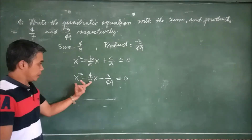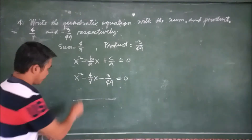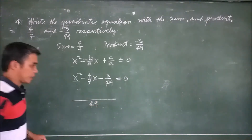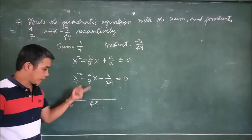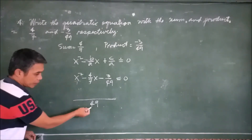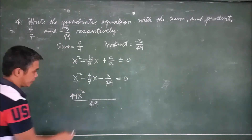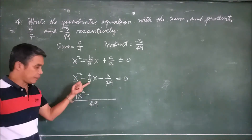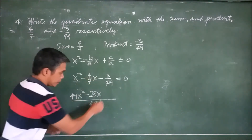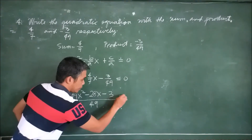Now let's simplify by finding the least common denominator. The denominators are 1, 7, and 49. The LCD is 49 since 49 is divisible by 49, by 7, and by 1. Multiplying through: 49 divided by 1 times x² equals 49x²; 49 divided by 7 equals 7, times 4 equals 28x; 49 divided by 49 equals 1, times 3 equals 3. So we have 49x² − 28x − 3 = 0.